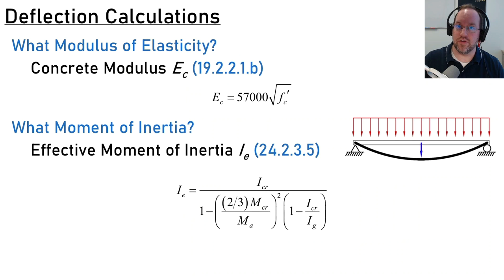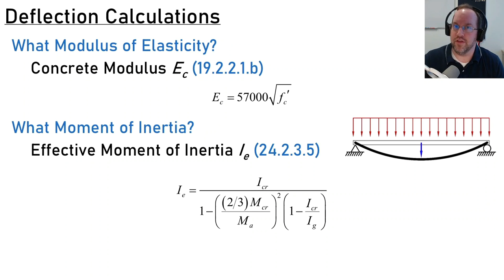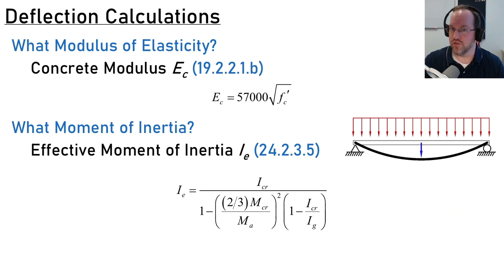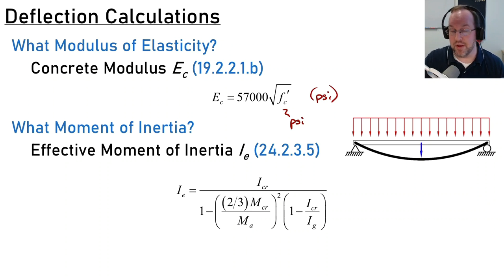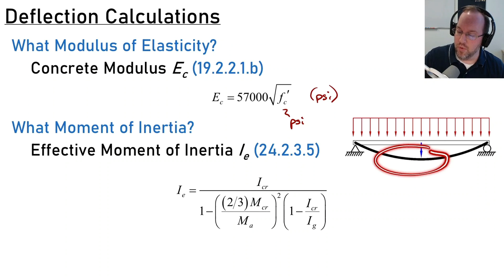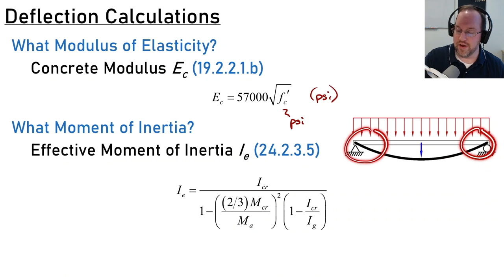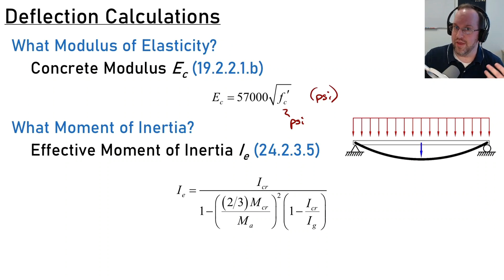Once you have the loads, you have to consider how you're going to calculate the deflections. Regardless of what method you use, deflection calculations always need two numbers: a modulus of elasticity and a moment of inertia. For a reinforced concrete beam, we'll use the concrete modulus. For the moment of inertia, we have to consider that we're going to have a cracked beam, but it may not be cracked everywhere equally. So we need some kind of effective moment of inertia to get some effective stiffness along the length of the beam.